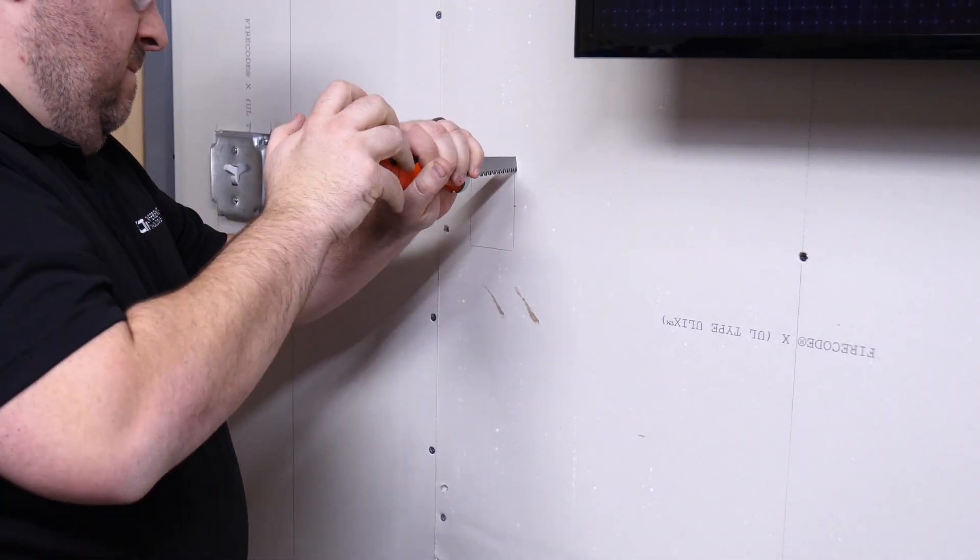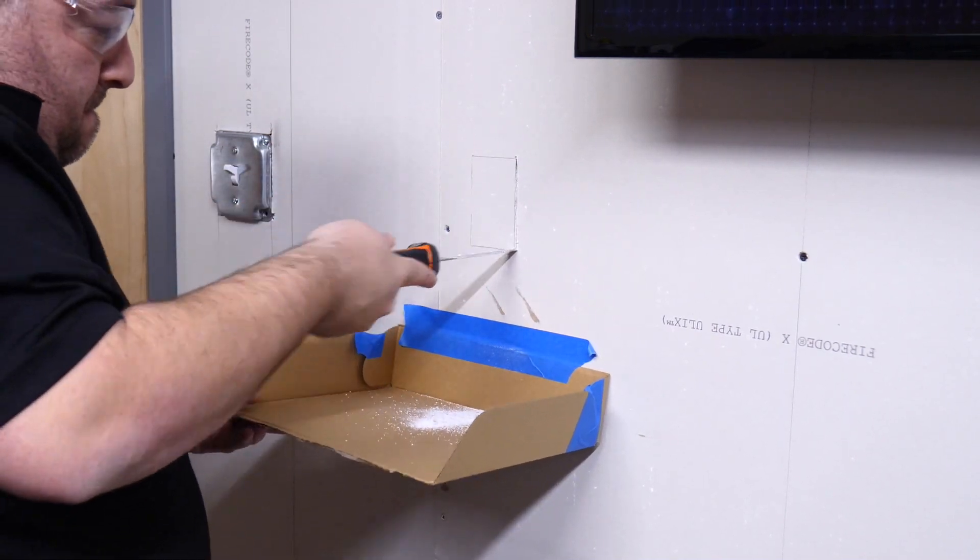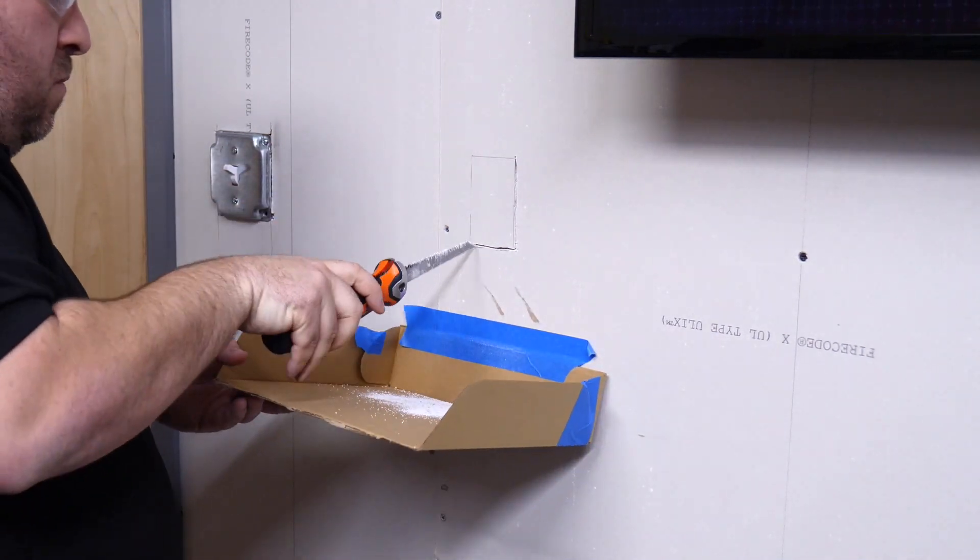Before we cut into the drywall, let's first use some painters tape and a box lid to prevent our dust from getting to the floor. If you want to see another video on workplace tidiness, click the link above.